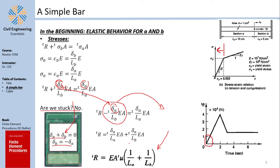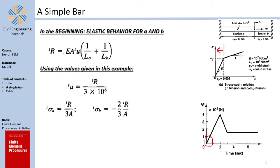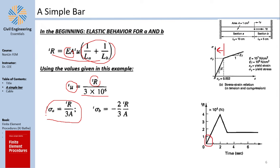In the end, this is the equation that connects force with displacement. Delta_A was replaced with U. You can rewrite the equation as U equals the load divided by a stiffness number: E times A times the geometric factor. Also notice that sigma_A equals R over 3A, and sigma_B equals negative 2R over 3A.